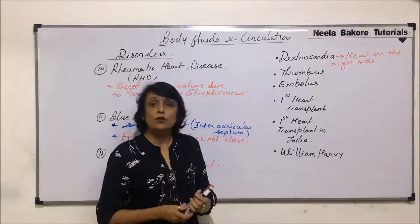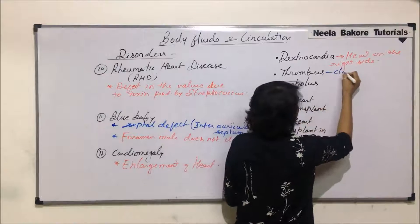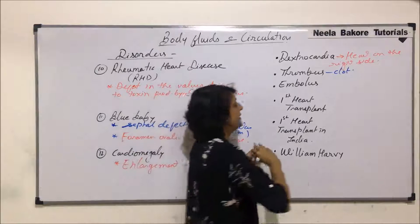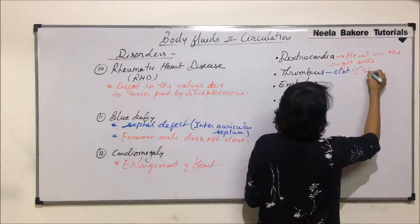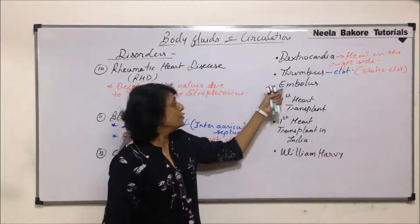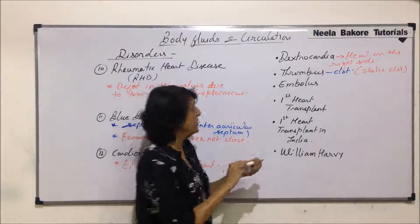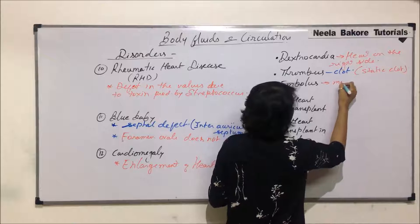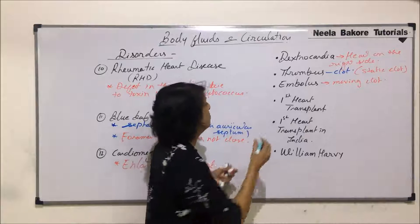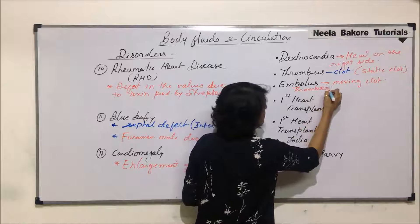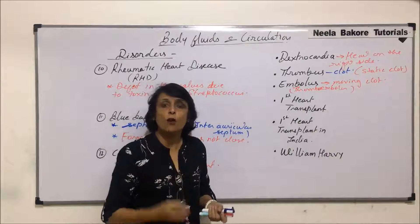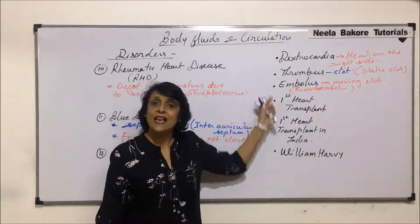The term thrombus is given to a clot. If the clot is static — meaning wherever the clot is formed it remains there — then that is known as thrombus, or we can call it a static clot. Embolus is the term given to a mobile or moving clot. It is also known as thromboembolus. If the clot is small and it detaches from the place where it was formed and keeps moving in the circulation, then that is known as embolus.